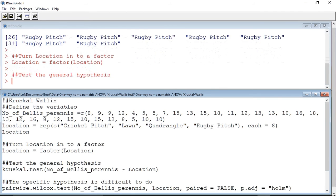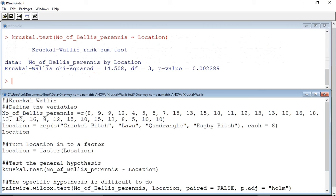Now we can run the test. We can see that the H value is 14.508, and the probability value given is 0.002289.